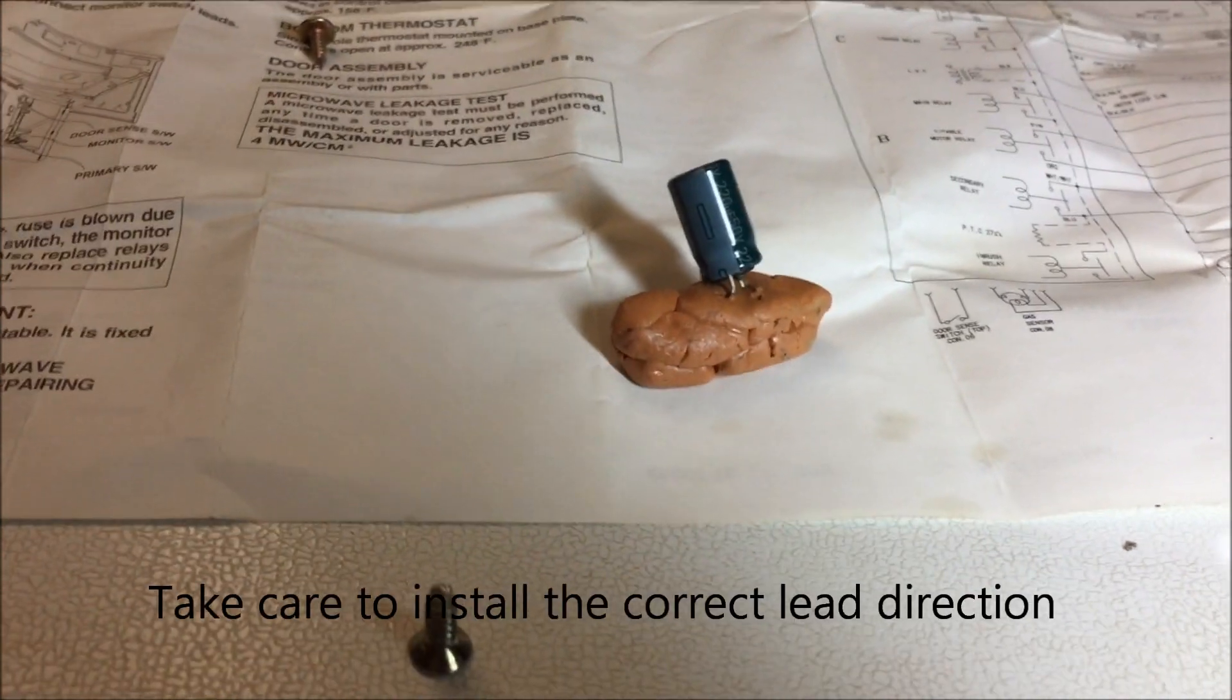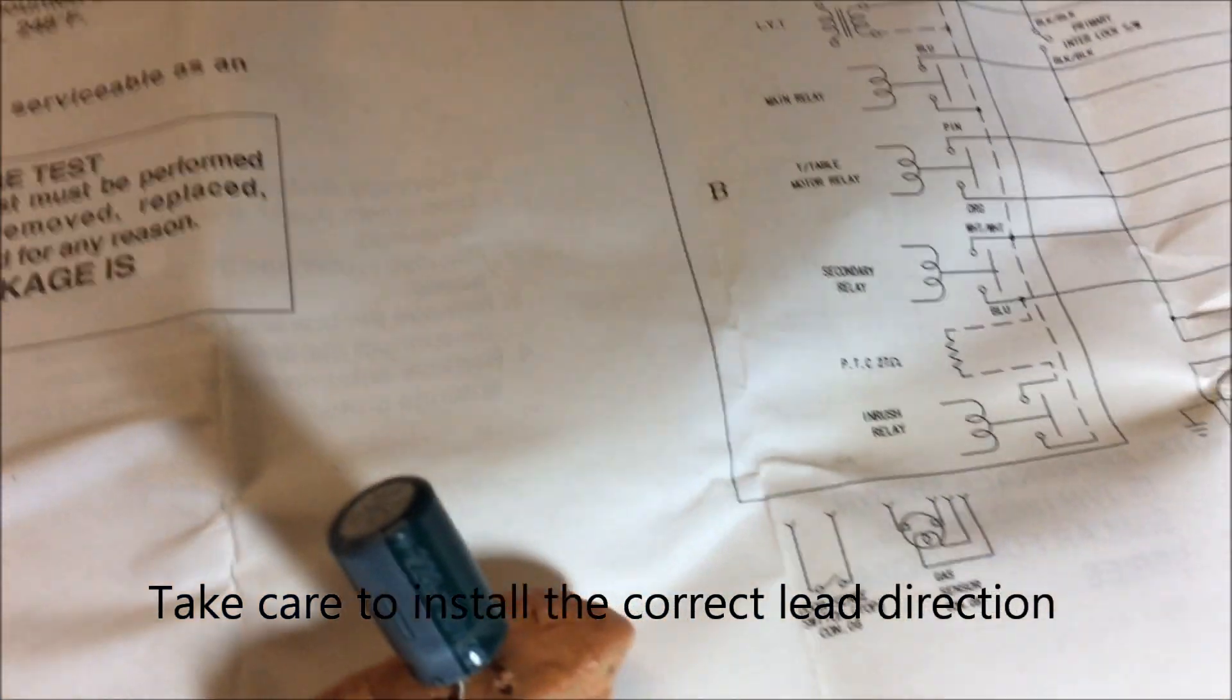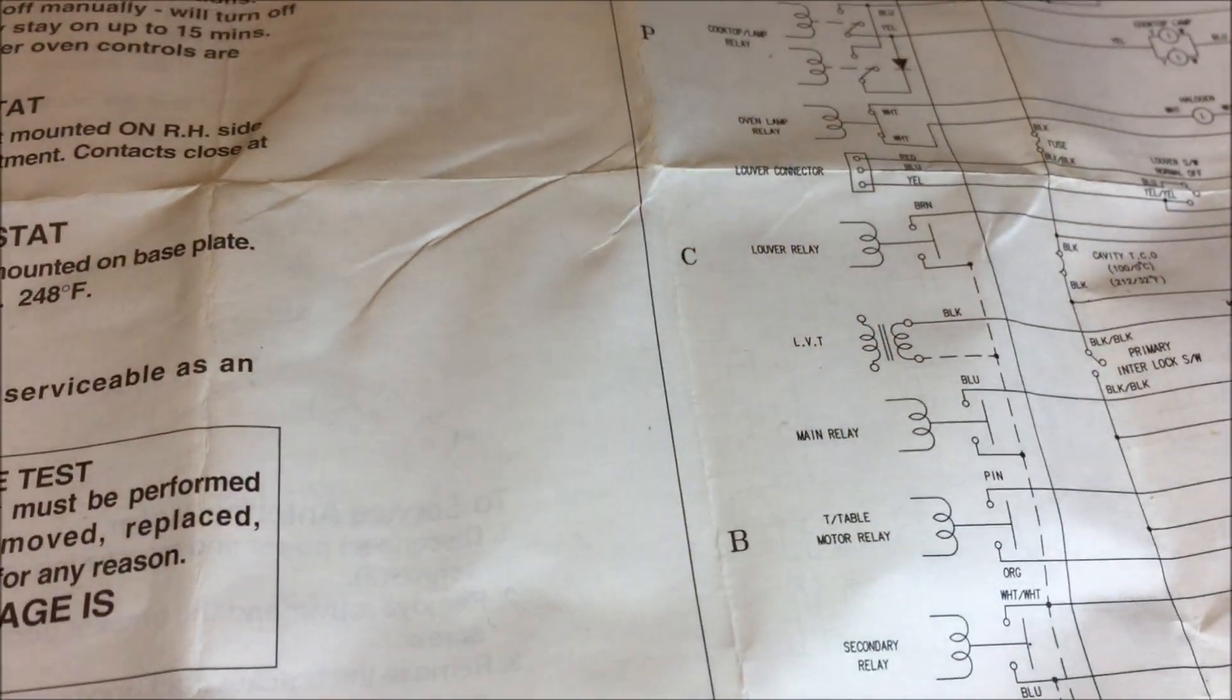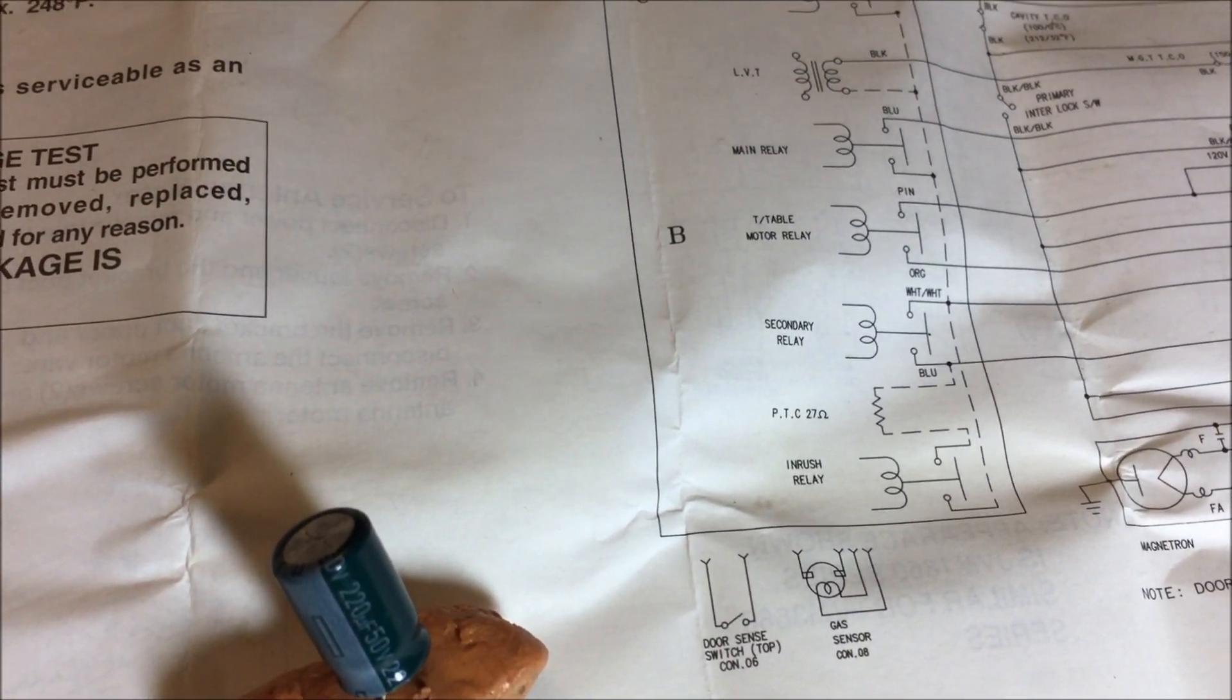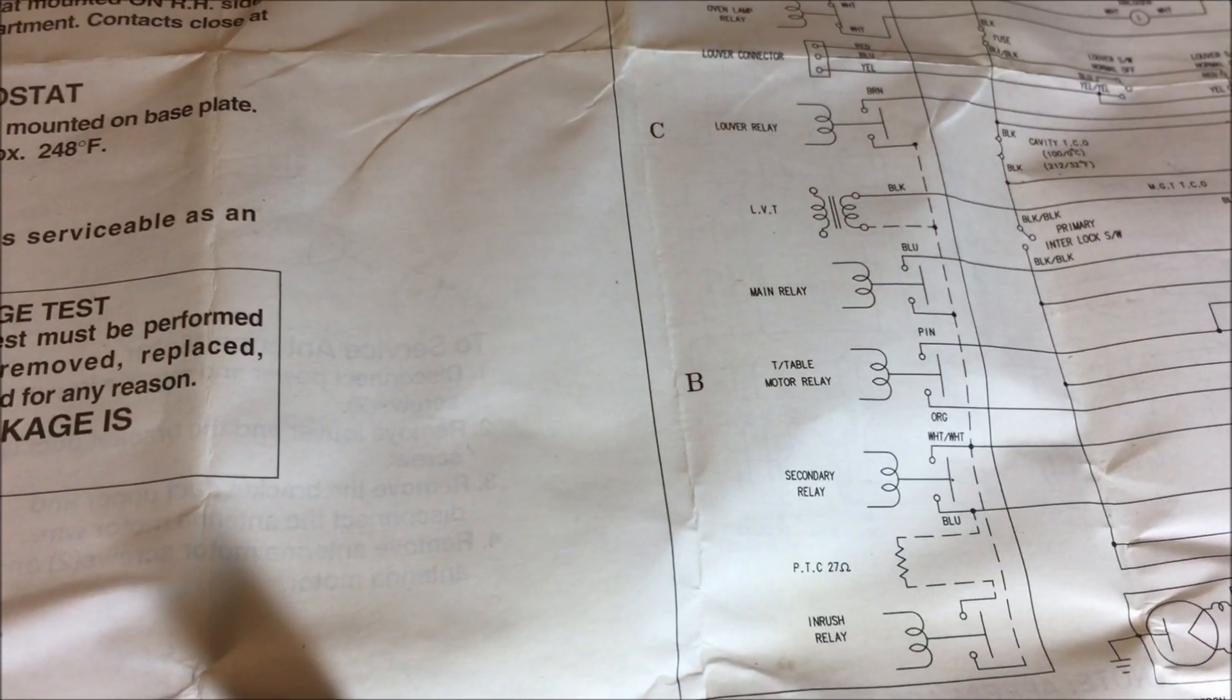The relays are shown here in the circuit diagram. There's quite a few here, but on the circuit board inside this microwave oven I only counted six, and the one that was buzzing the most was the LVT one.